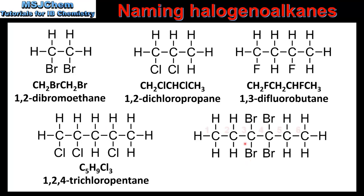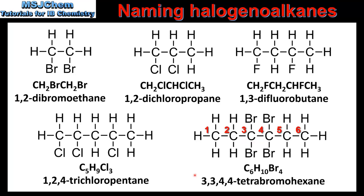So this molecule is named 1,2,4-trichloropentane. The last example in this slide has 6 carbon atoms in the longest chain. Carbon number 3 and carbon number 4 are both bonded to 2 bromine atoms, so this compound is named 3,3,4,4-tetrabromohexane.